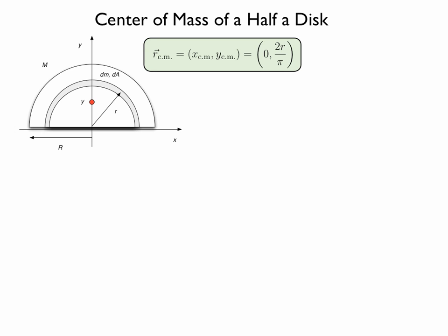Due to symmetry, the x position of the center of mass of those rings will be zero and we need to consider only the y position of the center of mass, which was equal to 2r over pi, where r was the radius of the ring.